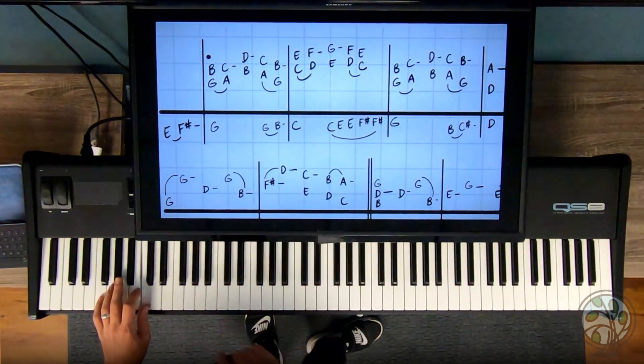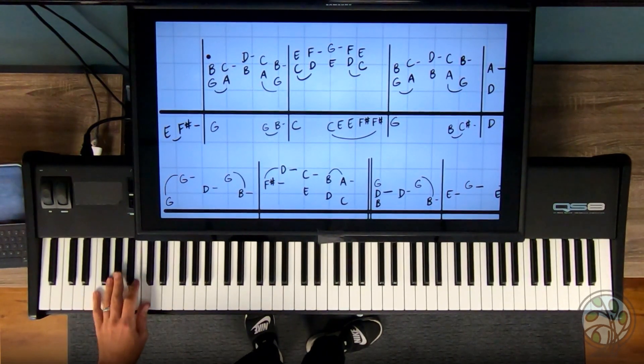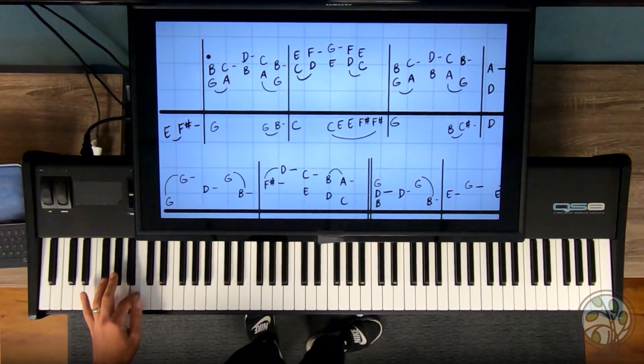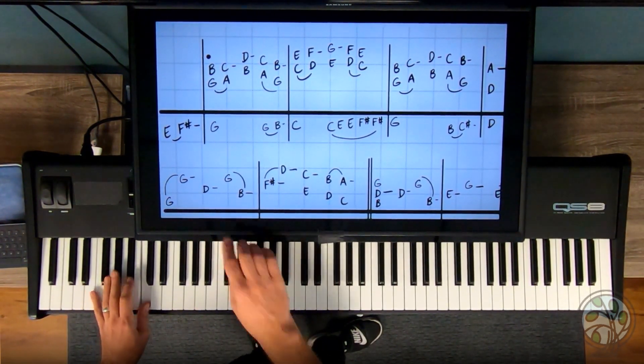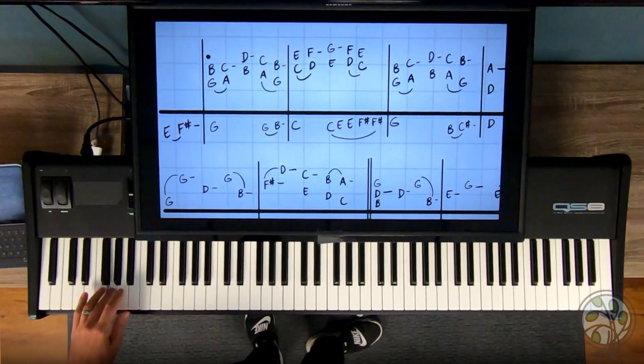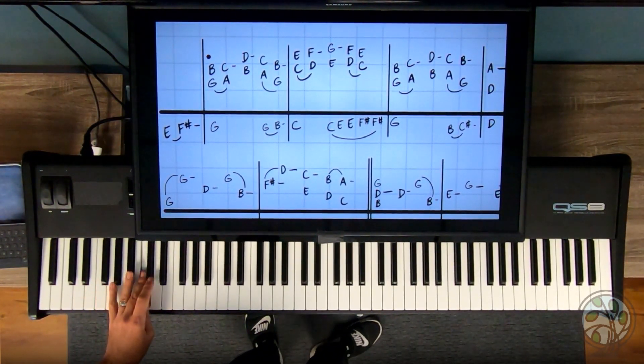So there's the next little group of three notes. G, B, C. And I'm going to use, 4, 2, 1. Let's put that together. Dun, dun, dun. 2, 3. Bum, bum, bum.